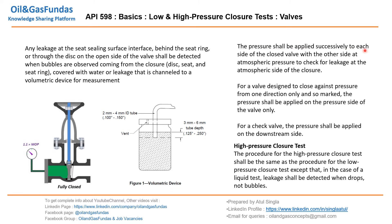Pressure shall be applied successively to each side of the closed valve — first we close it and check through this side, then we close the other side and check through that side. For a valve designed to close against pressure from one side only, pressure shall be applied on the pressure side of the valve only. Any leakage at the seating arrangement shall be checked through the other side.